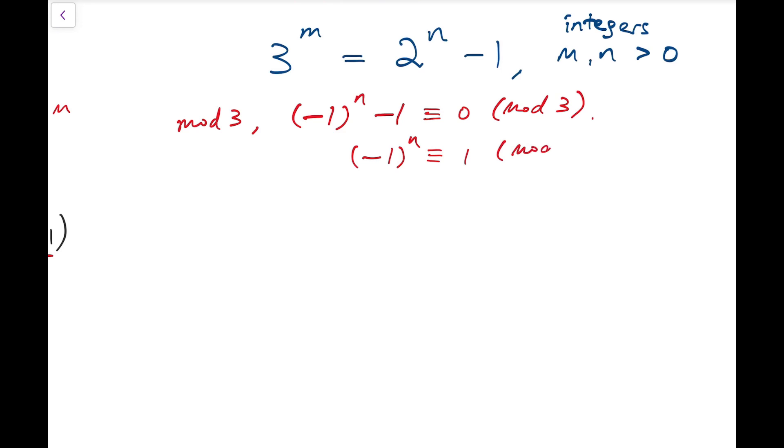So that means minus 1 to the power of n must be 1 mod 3, and so n is even. So I can let the small n to be 2 times big N where again, integer N is positive.